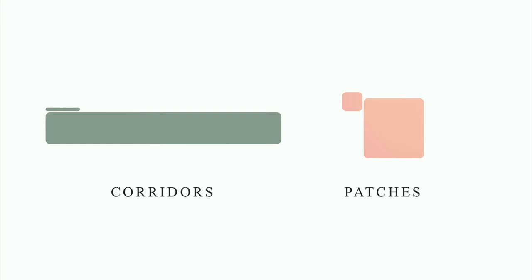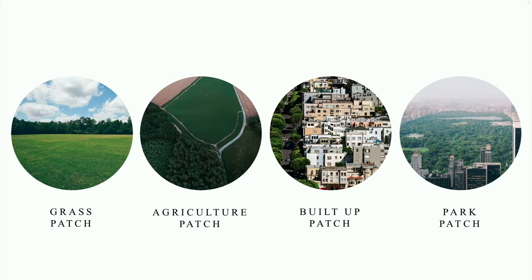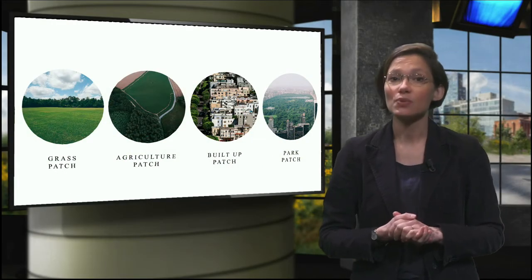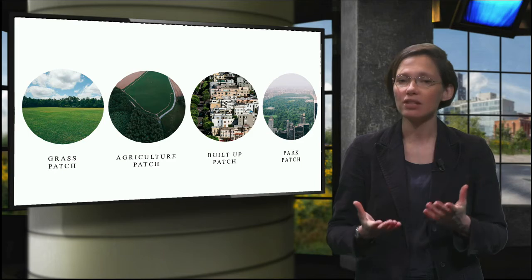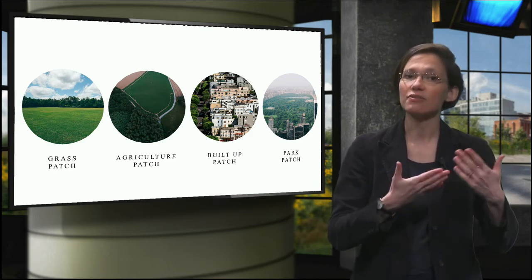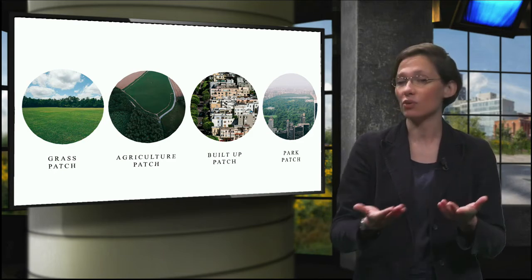Patches are areas with a homogeneous land use type — a patch of grass, a patch of agricultural field, a patch of high-density built-up area, or a patch of park. All the spaces you can recognize having a distinctive type of land use. The reason we look at patches is because we are looking for available spaces within the fused areas and their potential to retrofit and receive further green and blue elements.